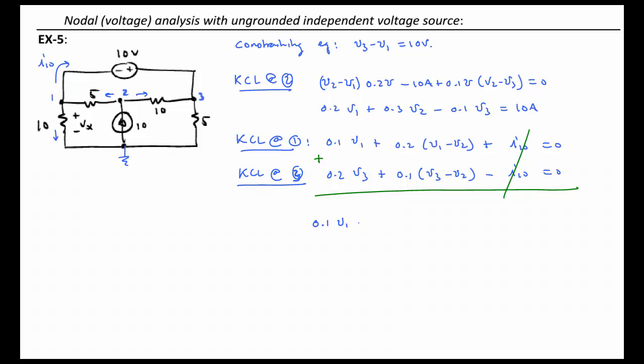So, we've got 0.1 V1 plus 0.2 V1 minus 0.2 V2, and then we have plus 0.2 V3, plus 0.1 V3 minus 0.1 V2. And all of that is equal to 0.